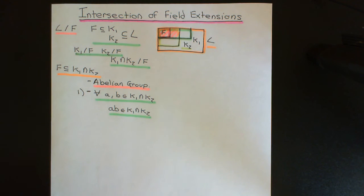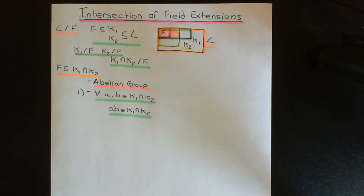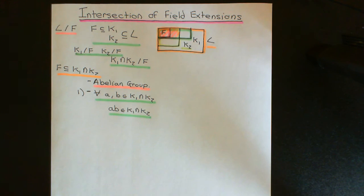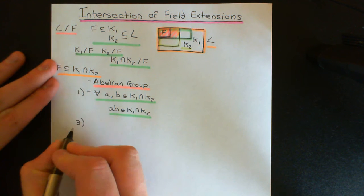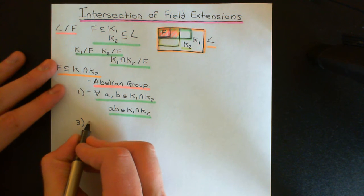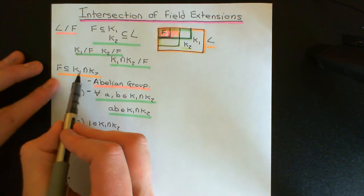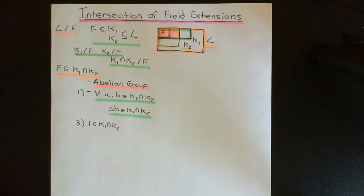Axiom two is associativity. We don't need to worry about this — whenever you restrict down an associative multiplication law, it still obeys associativity, otherwise it wouldn't obey it as part of the larger multiplication table on L. Axiom three: we need to make sure the multiplicative identity is in K1 intersect K2. The multiplicative identity is in F, and F is certainly in K1 intersect K2, so 1 will be in K1 intersect K2.